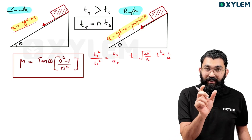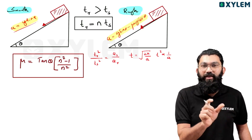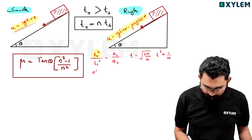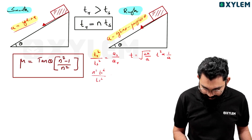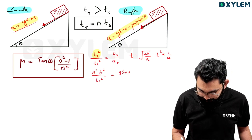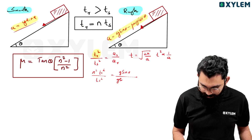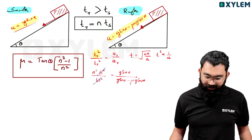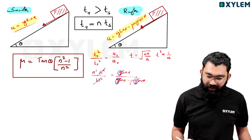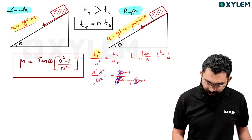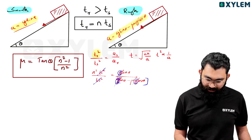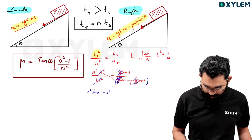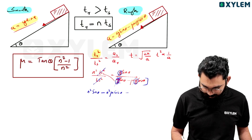Since the rough surface time is n times the smooth surface time, t_rough² equals n² times t_smooth². So n²t_s² divided by t_s² equals g sin θ divided by (g sin θ minus μg cos θ). The t_s² cancels, and g is common in both numerator and denominator, so we can cancel g.